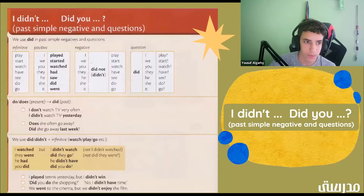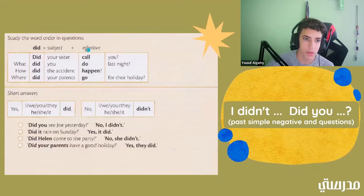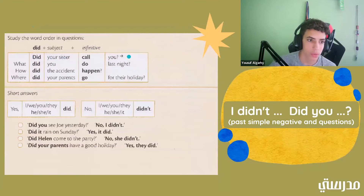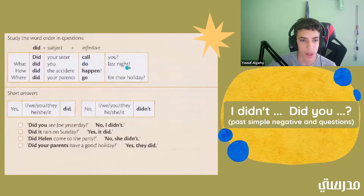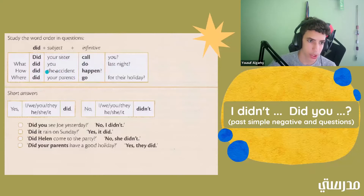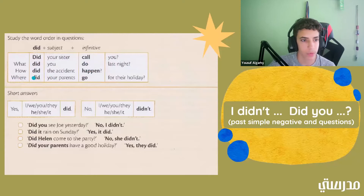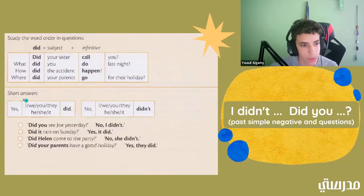Did plus subject plus infinitive: 'Did your sister call you?' — we have did, the subject 'your sister,' the infinitive 'call,' and then 'you.' 'What did you do last night?' — did, subject 'you,' infinitive 'do,' then 'last night.' 'How did the accident happen?' — subject is 'the accident,' infinitive is 'happen.' 'Where did your parents go for their holiday?' — 'your parents' is the subject, 'go' is the infinitive.